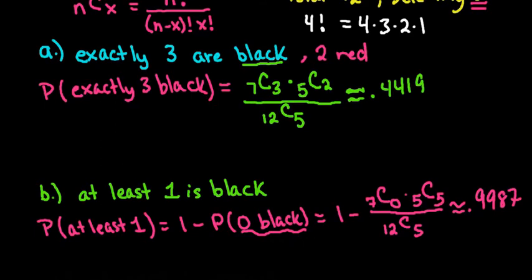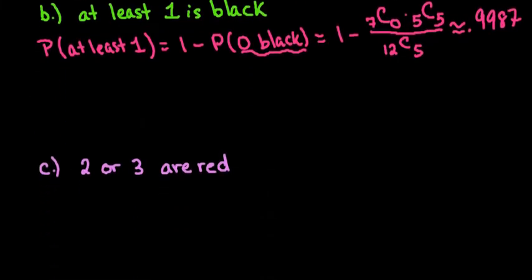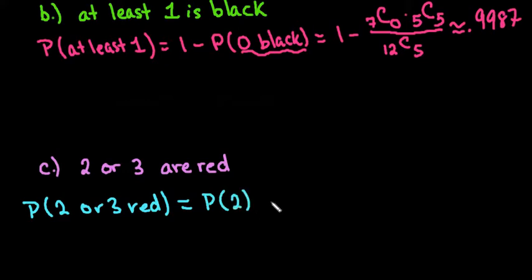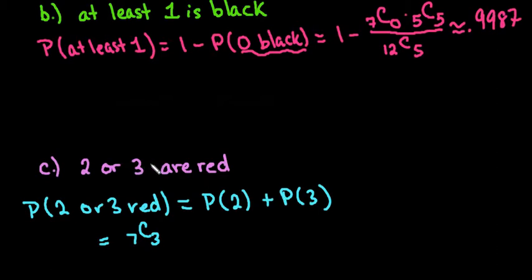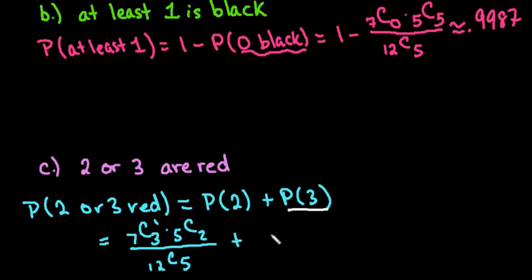For the last one, we want the probability of two buttons being red or three buttons being red. We use the addition rule: P(2 red) + P(3 red). For two red buttons we would have three black and two red, and for three red buttons we would have two black and three red, each divided by C(12,5).